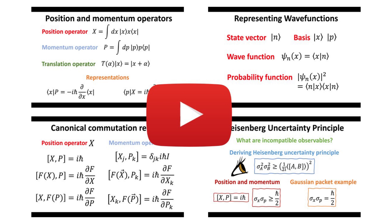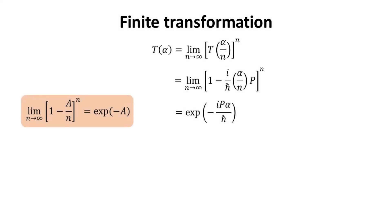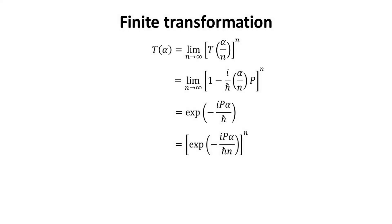Please also check out the other videos in this quantum mechanics playlist for more discussion about the basic concepts on the position and momentum operators and representations. We note that finite transformations can always be constructed from infinitesimal transformations. The infinitesimal transformation can be expressed in its Taylor form, which via a standard mathematical identity allows us to express it in the exponential operator form. The fact that finite translation can be divided into n constituents is a consequence of the translation operator being unitary, and all unitary operators can be written in exponential form.